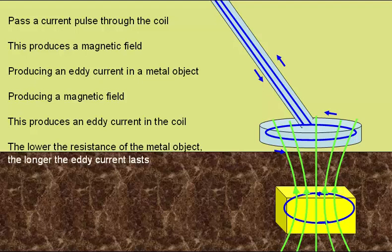The lower the resistance of the metallic object, the longer the eddy current within the metallic object will last.